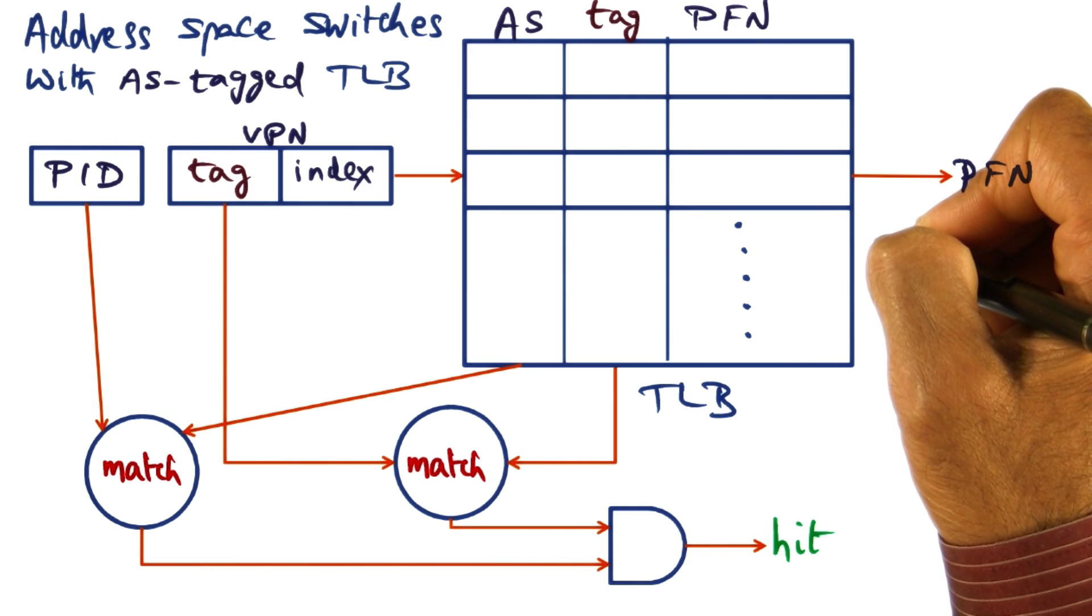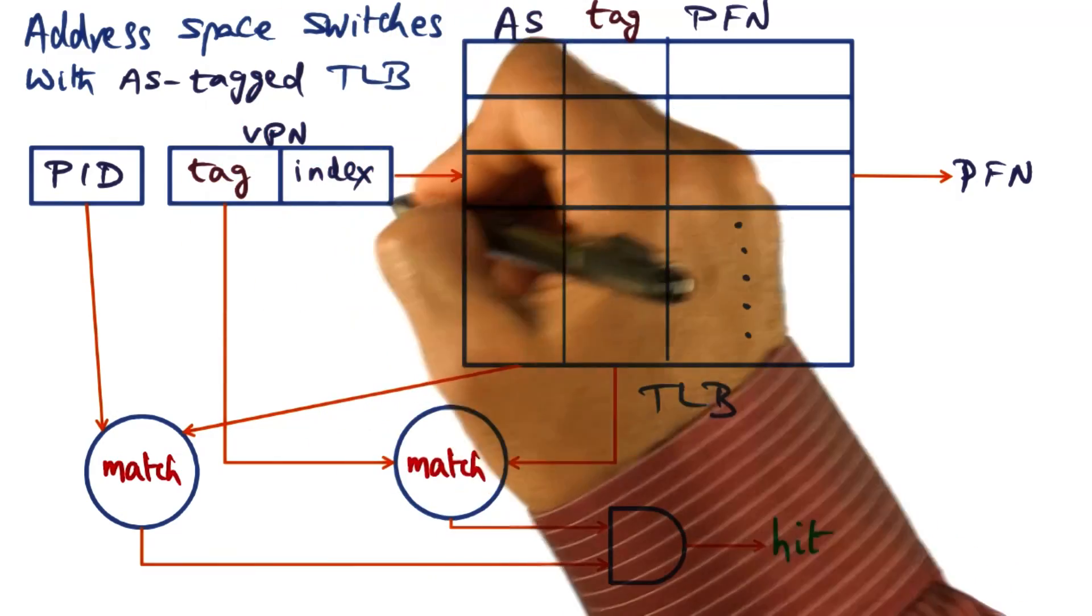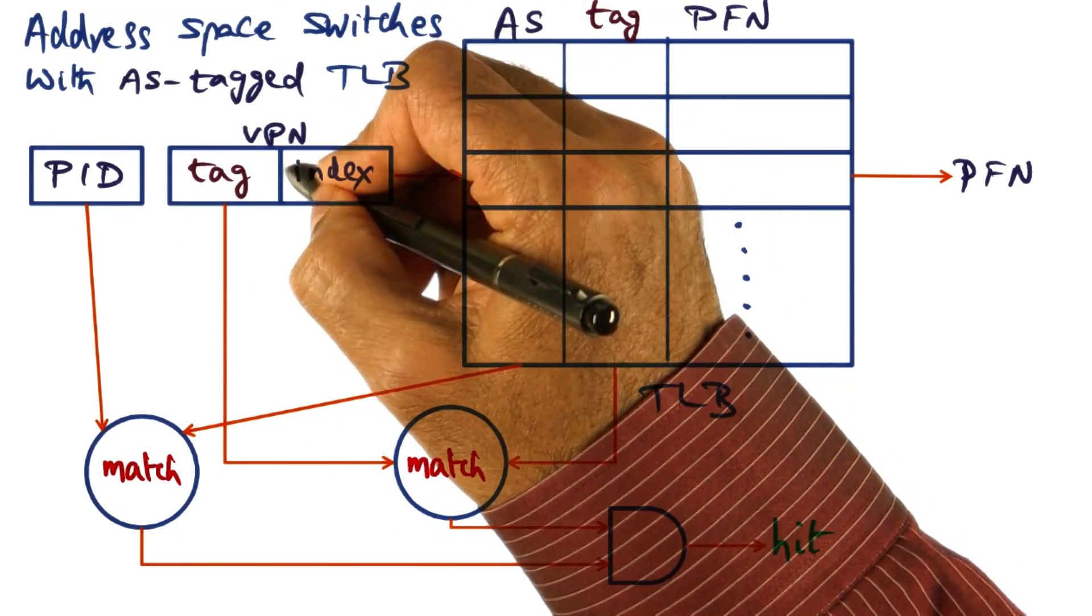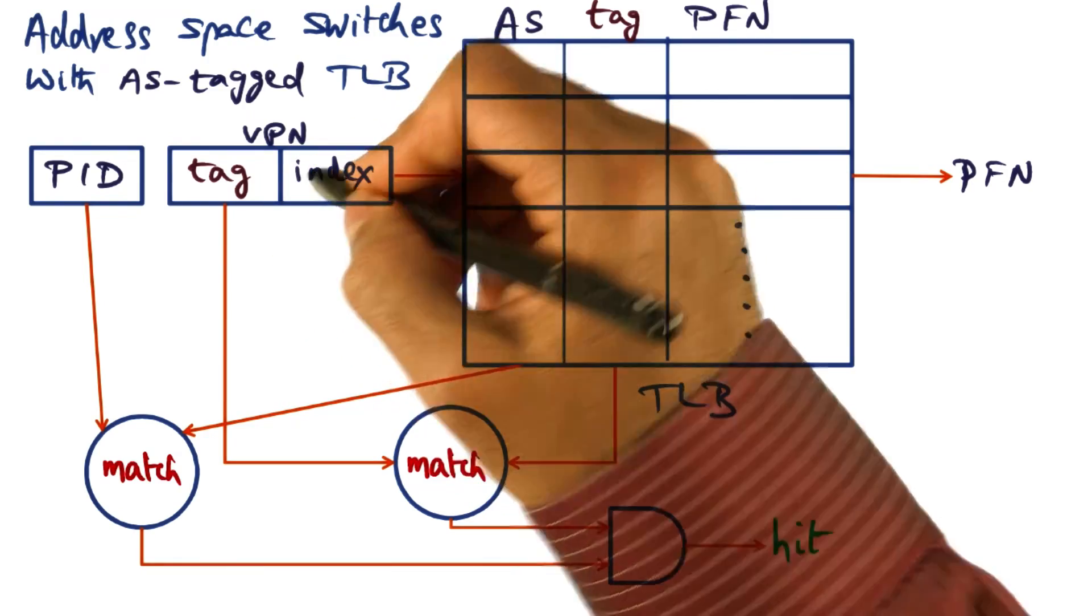How does address translation work in this address space tag TLB? Similar to a normal TLB, we take the virtual address and split it into two parts: the index part and the tag part.